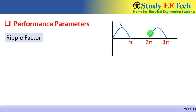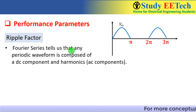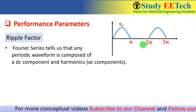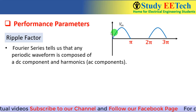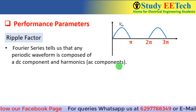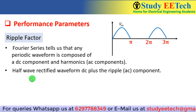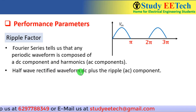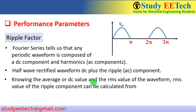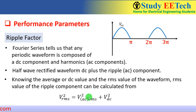Now coming back to the waveform of the half wave rectifier. From Fourier series we know that any periodic waveform can be represented by a DC value plus its harmonics. The output of a half wave rectifier is also a periodic waveform, so it contains a DC value plus harmonic components — the AC component — which is the ripple. Knowing the average or DC value and the RMS value of the waveform, the RMS value of the ripple component can be calculated from this equation.